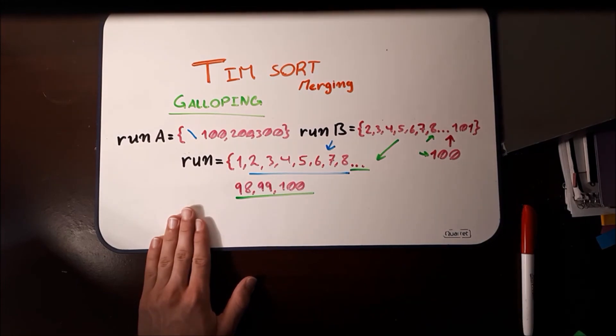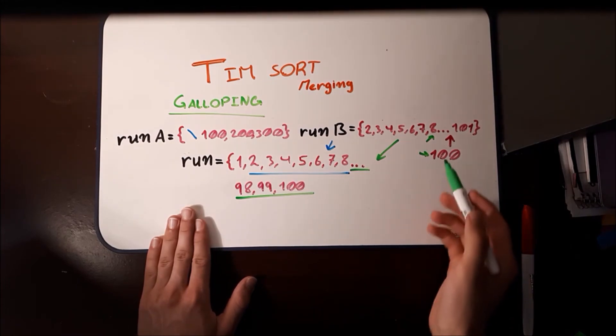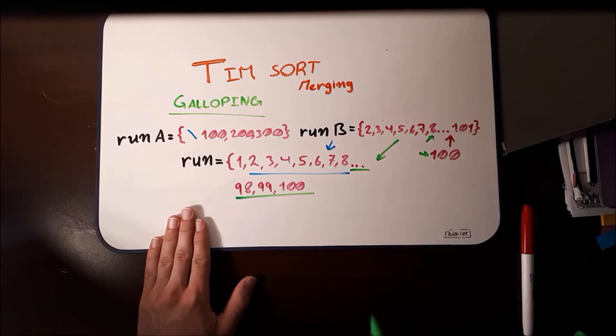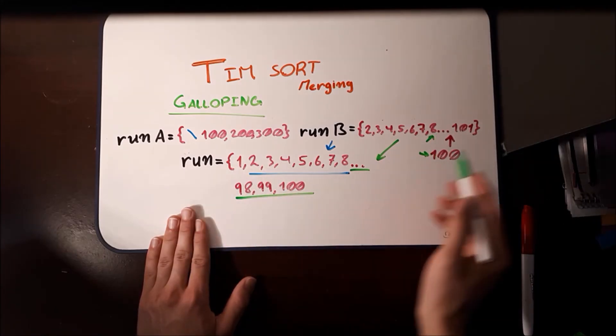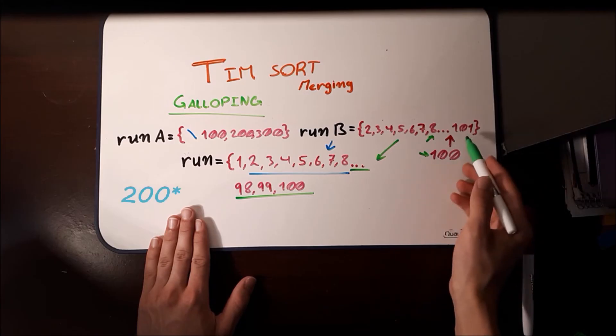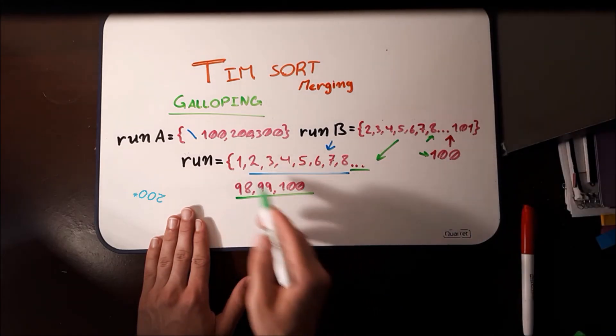Then, the algorithm returns to merge sorting as normal. So now that it has all of these elements between 8 and 100 in the final run, it checks 101. Whereas 101 compared to 100, it is greater.